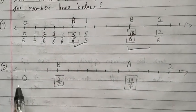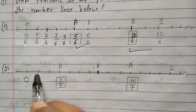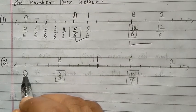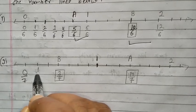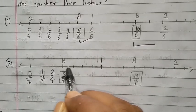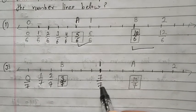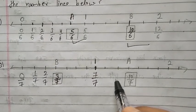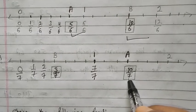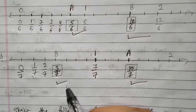Now come to question number 3. Here is given 0, and here is given 1. How many parts are divided? 1, 2, 3, 4, 5, 6, 7 — so 7 parts are divided. That means this is 0 upon 7, so this one is 1 upon 7, next 2 upon 7. B indicates 3 upon 7. Next 4 upon 7, 5 upon 7, 6 upon 7, this one 7 upon 7, that means 1. Next 8 upon 7, 9 upon 7, and A indicates 10 upon 7. So point A indicates 10 upon 7 and B indicates 3 upon 7.